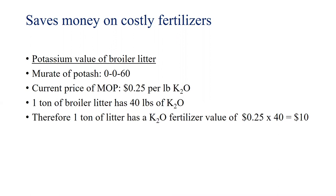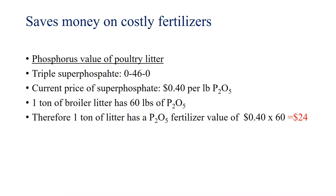Now let's calculate the potassium value of broiler litter. The most common source of potassium is muriate of potash, currently priced at around 25 cents per pound. One ton of litter has around 40 pounds of potash, therefore one ton of litter has a potassium value of around $10. For phosphorus, using triple super phosphate priced at around 40 cents per pound — one ton of broiler litter has 60 units of phosphorus — the phosphorus fertilizer value is around $24 per ton.